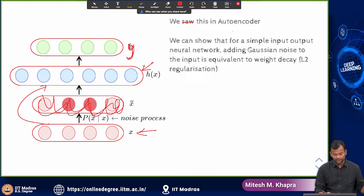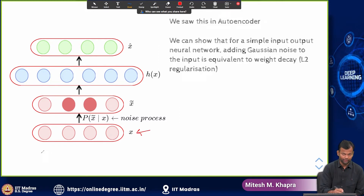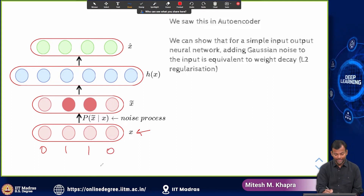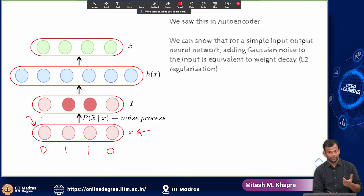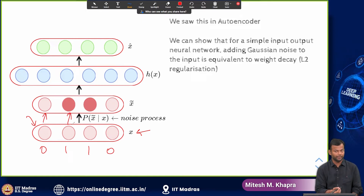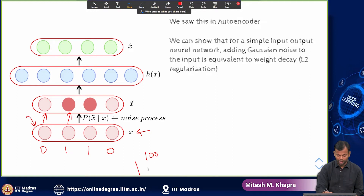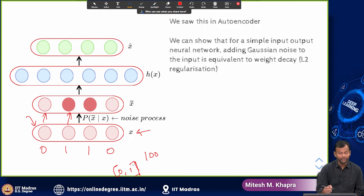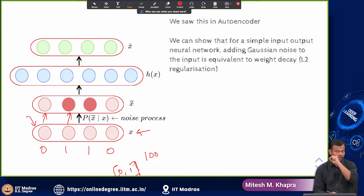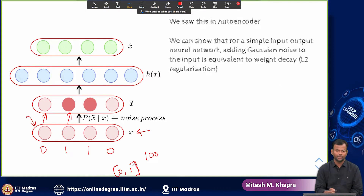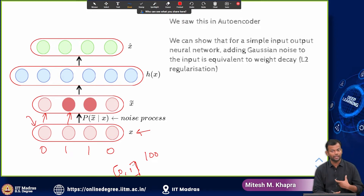What adding noise to the inputs does: you take your inputs — assume they are binary for simplicity. You add a noise process such that for every input, with probability 80 percent it keeps the input as it is, and with probability 20 percent it flips the input. So if you have 100 binary inputs, 20 percent of those values will be corrupted.